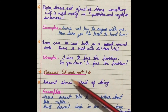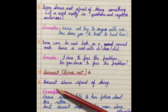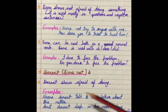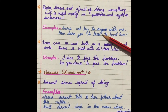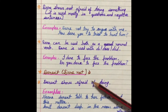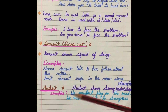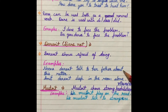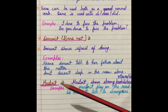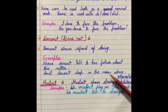Dare not shows afraid of doing — dare not क्या show करेगा? Dare का meaning है डर नहीं लगता, हिम्मत है, but dare not shows afraid of doing — यह show करता है कि हमें डर लग रहा है. For example: 'Nina dare not talk to her father about this matter' — Nina में हिम्मत नहीं है इस matter के बारे में अपने father से बात करने की. 'Amit dare not sleep in the room alone' — Amit की हिम्मत नहीं है अकेले room में सोने की, means उसे डर लगता है. So for showing afraid of, we use dare not.